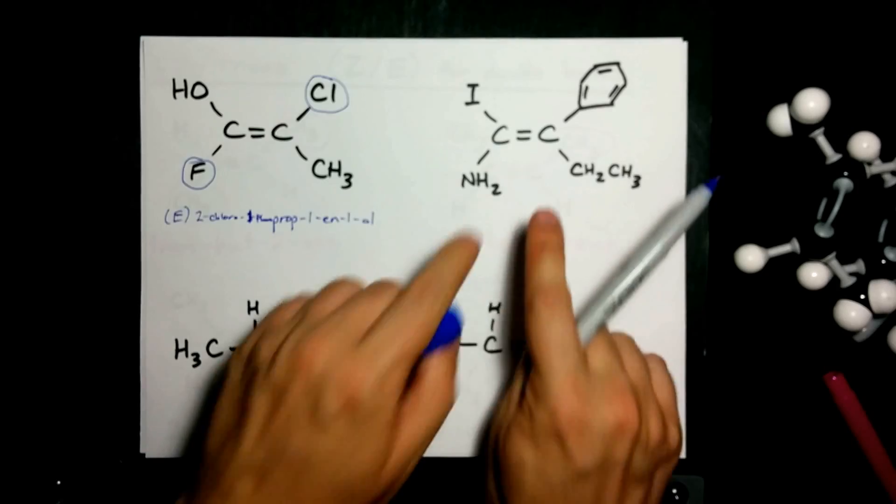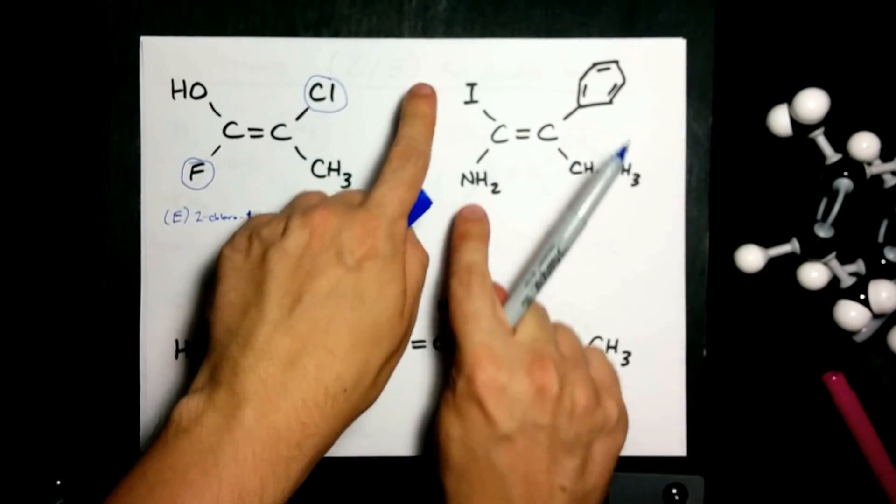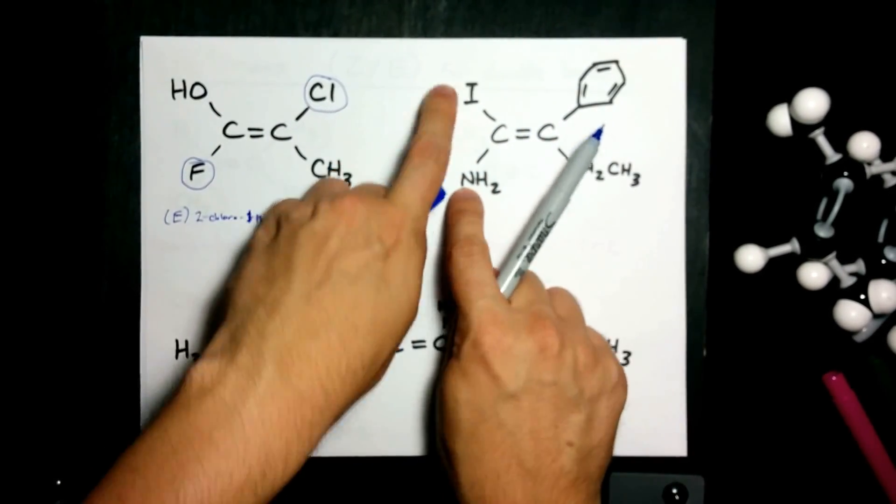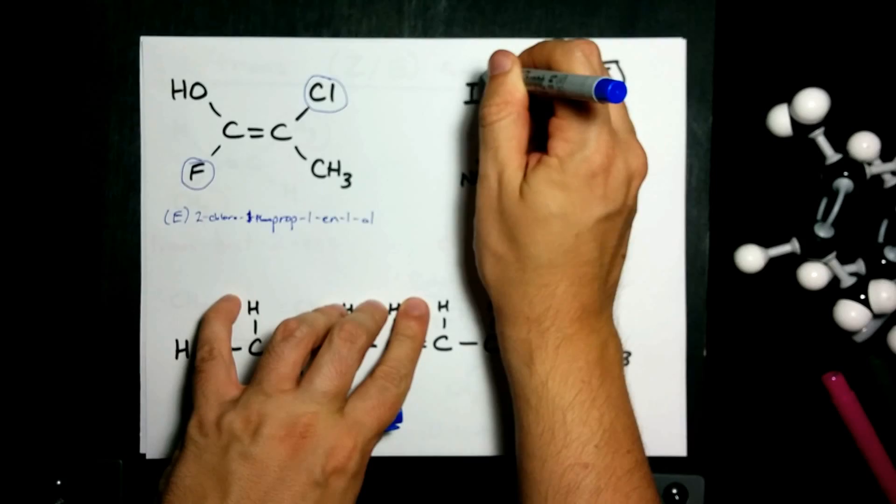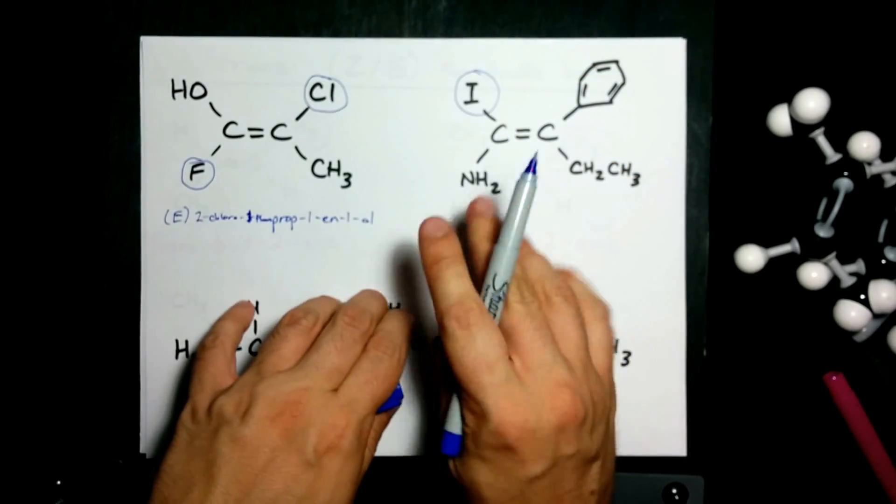All right, one more. Two carbons with a double bond. I and NH2 are not the same. I weighs 127. Nitrogen is 14.